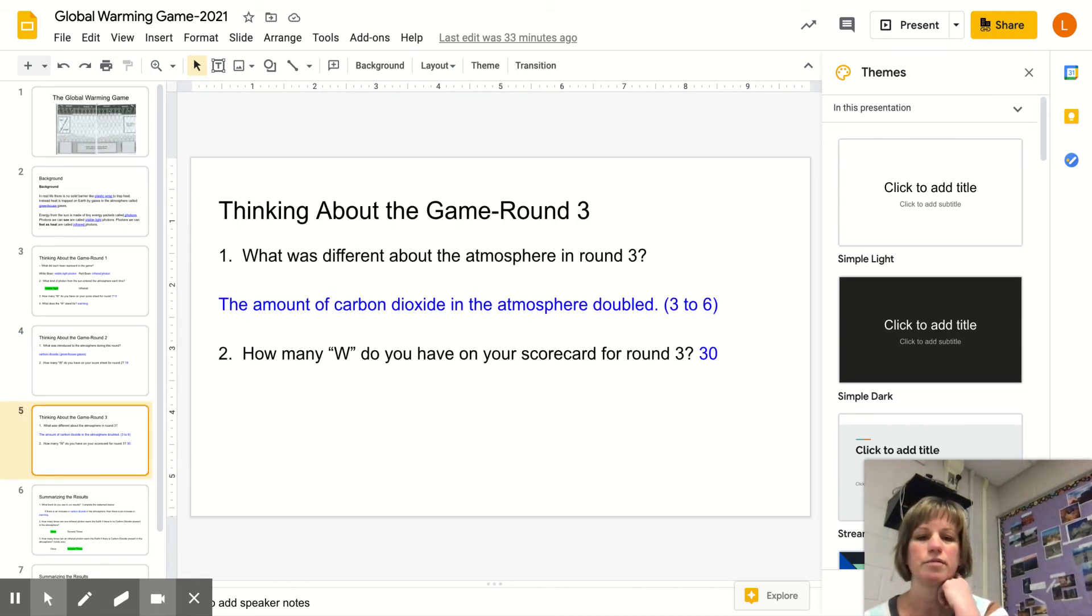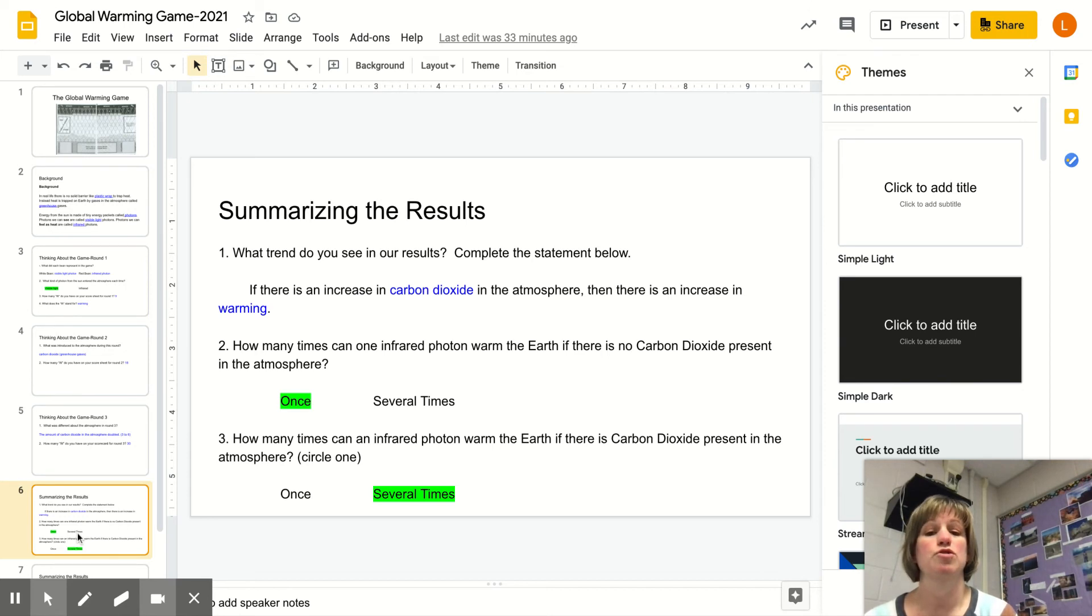Finally, in round three, we doubled the carbon dioxide in the atmosphere from three to six. We had 30 Ws after round three. Now that we know these results, we want to summarize them and make science sense of them. What trend do we see? This is super important. If it's in blue, that's what you should have written in: If there's an increase in carbon dioxide in the atmosphere, then there's an increase in warming.